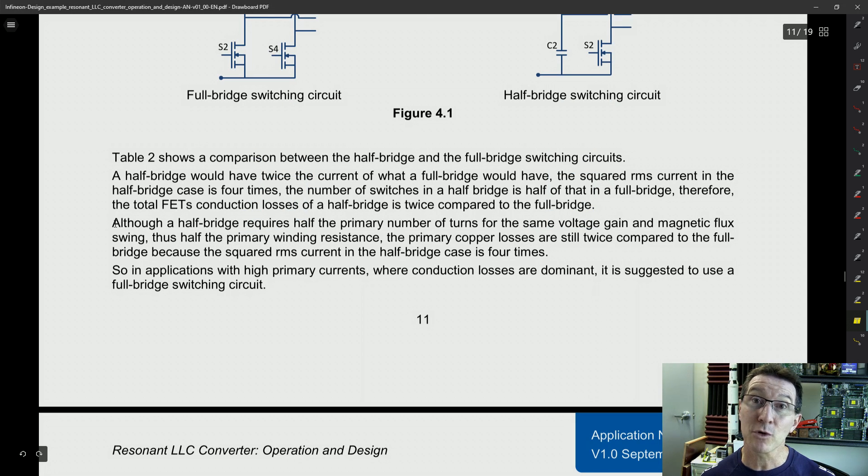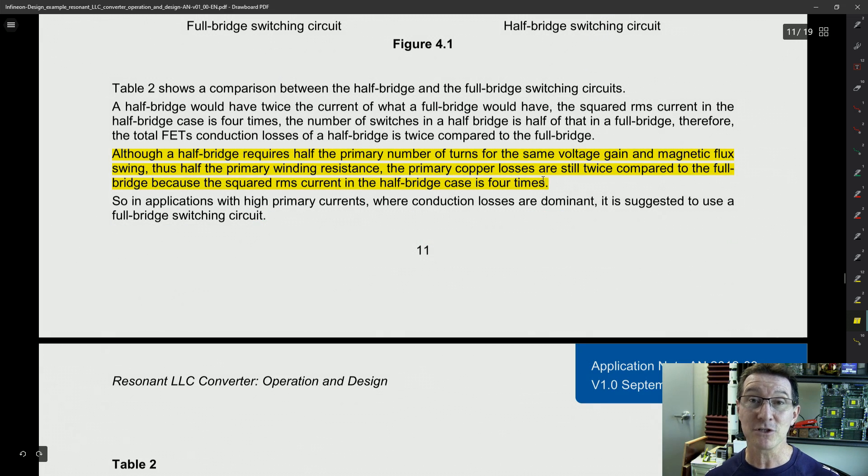And if you want to know the difference between a full bridge and a half bridge one, how and why, here you go. Although a half bridge requires half the primary turns for the same voltage gain and magnetic flux swing, thus half the primary winding resistance. The primary copper losses are, of course, double compared to the full bridge, because the squared RMS, that pesky I squared R thing. The squared RMS current in the half bridge is four times. So, it might be cheaper and simpler to design a half bridge resonant mode converter. And, as I said, they're relatively common. But for the best performance in a top shelf product like this, you're going to want to implement the full bridge converter. Definitely.